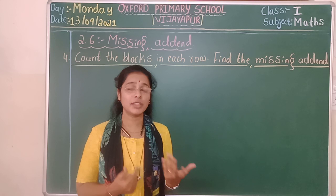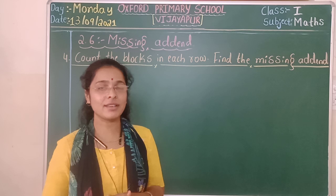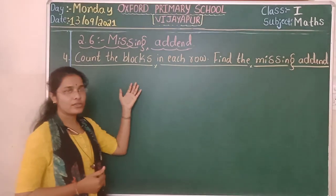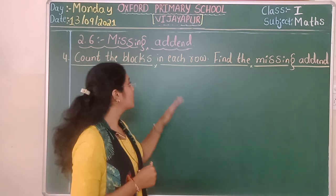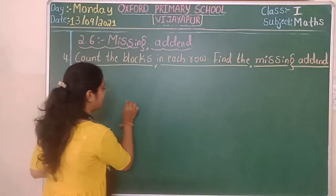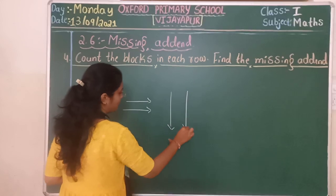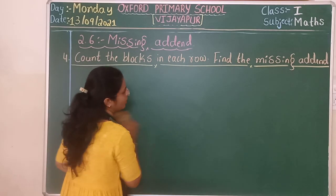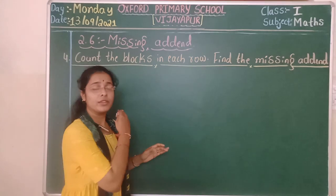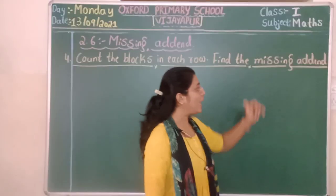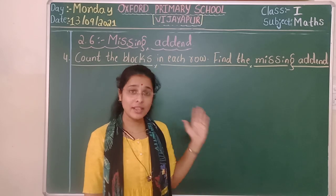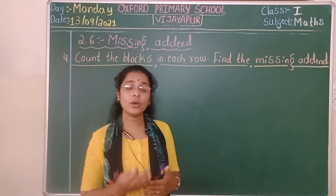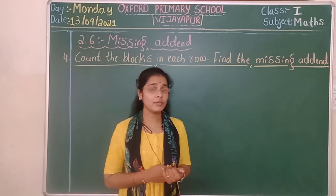With the help of these two vegetables, we learned the missing addend in our previous class. In today's class, we will learn the same exercise. I am on question number 4: count the blocks. Blocks are nothing but boxes. We have to count the boxes in each row — rows are these horizontal lines, columns are these vertical lines. Count the blocks in each row and find the missing addend.